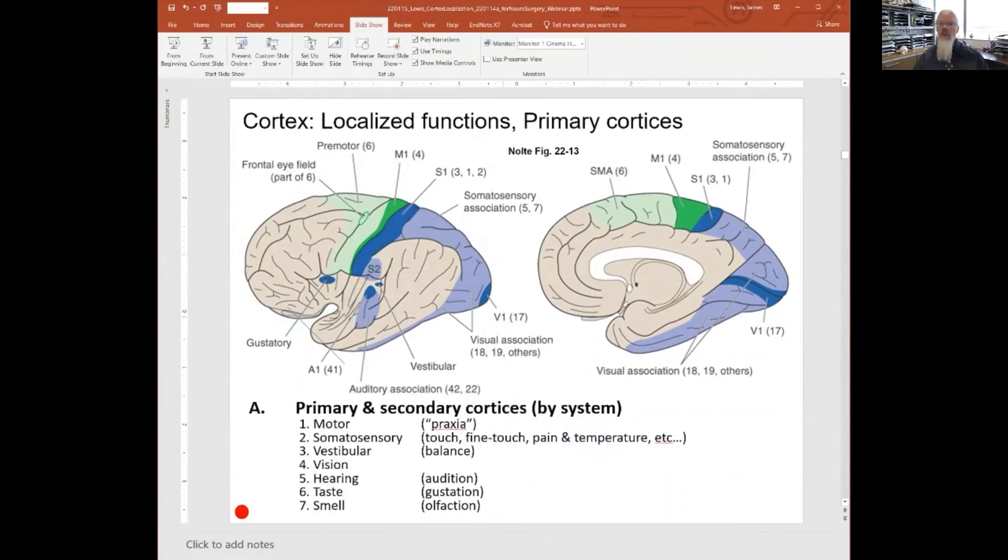In the next series of slides, we're going to cover motor, somatosensory, vision, hearing, taste, and smell as primary cortical systems before we go to associational areas.